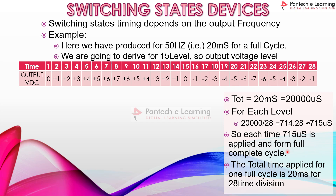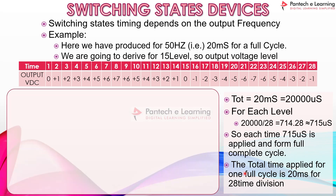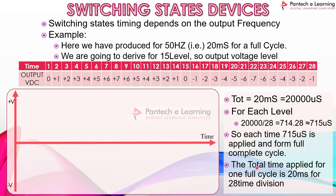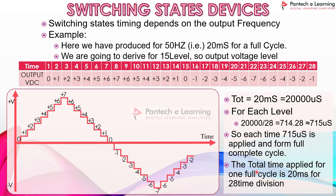There is a small animation showing how the waveform is generated over time with 28 time divisions: 0, +1, +2, +3, +4, +5, +6, +7, +6, +5, +4, +3, +2, +1, 0, then negative cycle −1, −2, −3, −4, −5, −6, −7, +6, +5, +4, +3, +2, +1, 0 — completing 28 time divisions. This full cycle represents the single-phase 15-level inverter output, showing how the 15-level inverter output is obtained from the hardware unit.